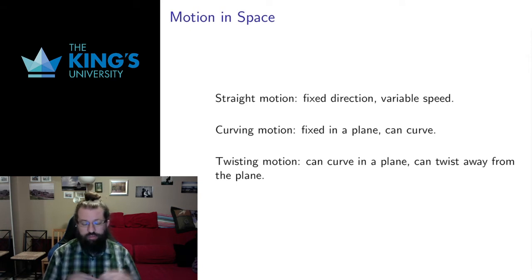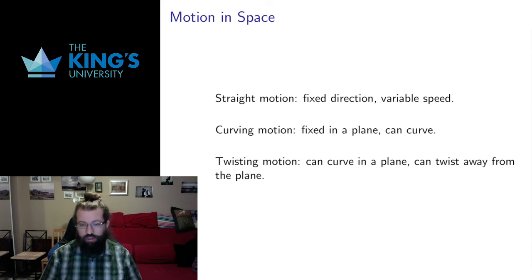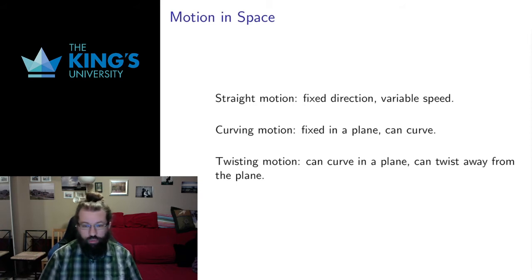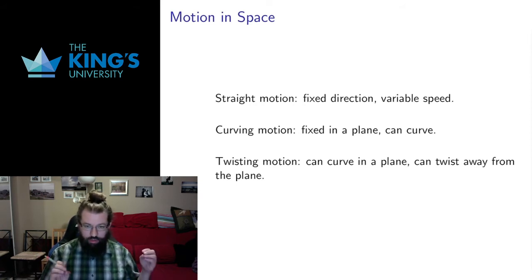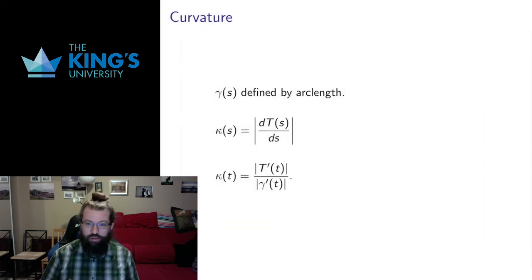So straight motion is motion confined to a line, curving motion is confined to a plane, and twisting motion can reach anywhere in three-dimensional space by changing the plane in which it is currently curving. This threefold description is going to underpin everything in this video on the calculus of parametric curves.